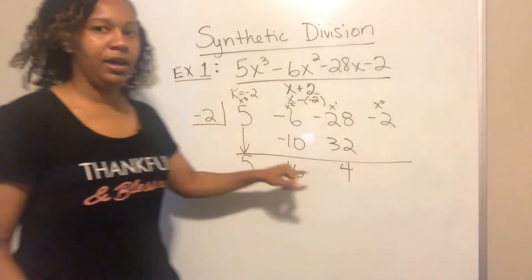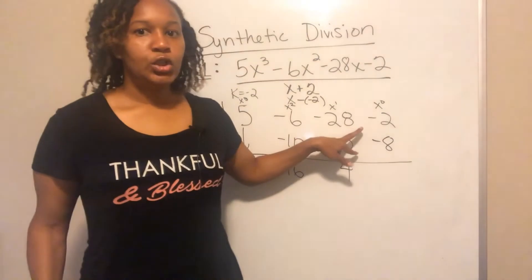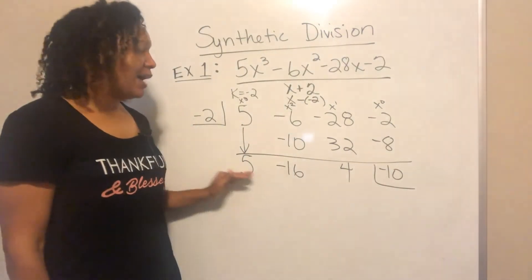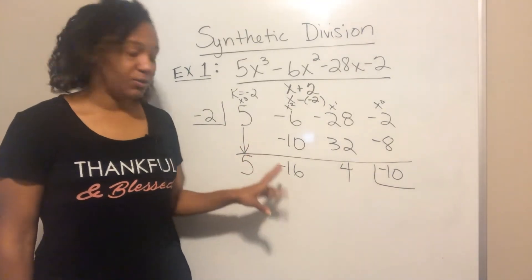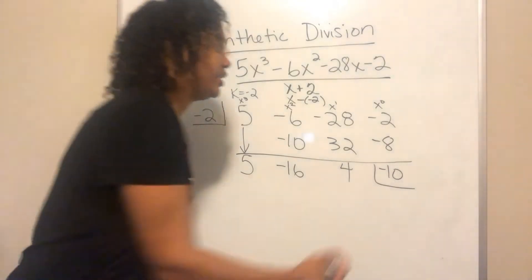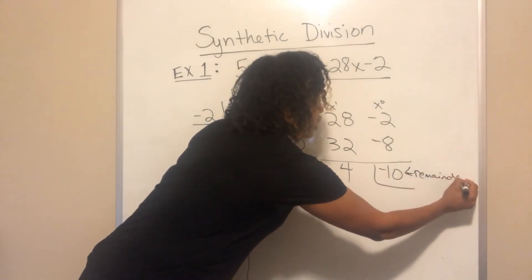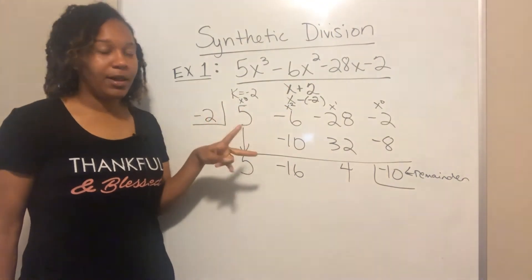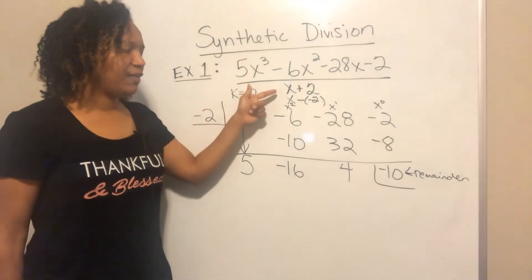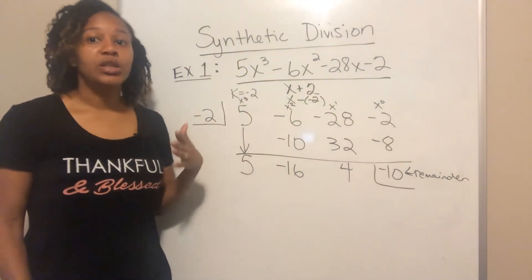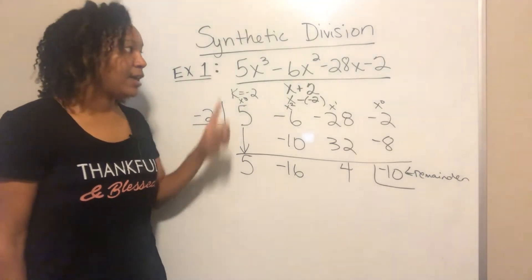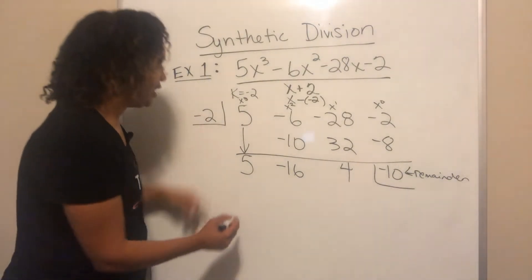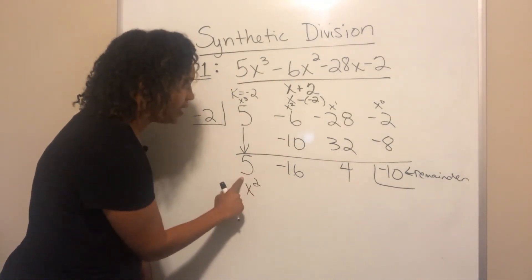4 is in the third row, so multiply by k: negative 2 times 4 is negative 8. Add the two numbers on top of each other: negative 2 plus negative 8 is negative 10. This bottom row gives the coefficients of your quotient, and the last number — which I put a half-box around — is the remainder. Since a third-degree polynomial was divided by a first-degree polynomial, the quotient is a second-degree polynomial — always one degree less.